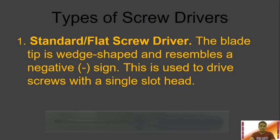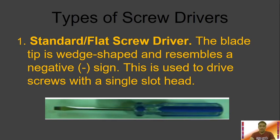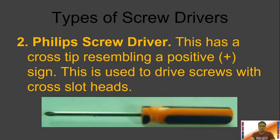We have different types of screwdrivers. First, the standard or flat screwdriver — the blade tip is flat-shaped and resembles a negative sign, used to drive screws with a single slot head. Then we have the Phillips screwdriver, which has a cross tip resembling a positive sign or cross, used to drive screws with cross-slot heads.